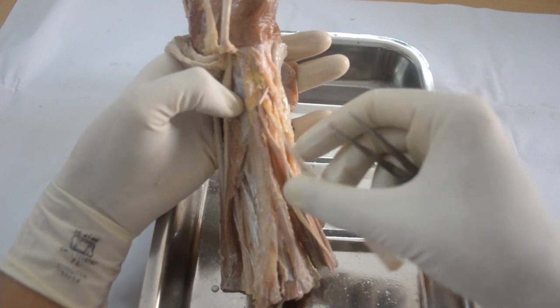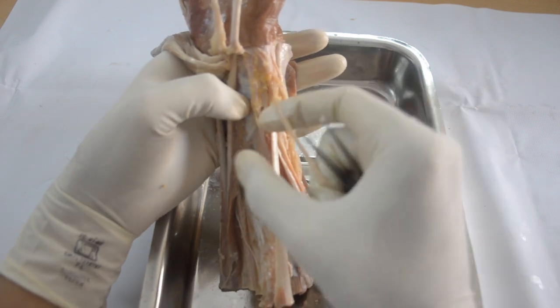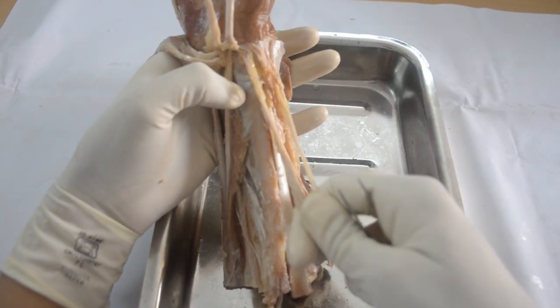Superficial terminal branch of radial nerve. See this? And radial artery along the lateral border.